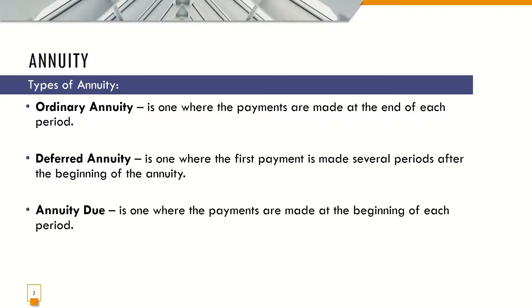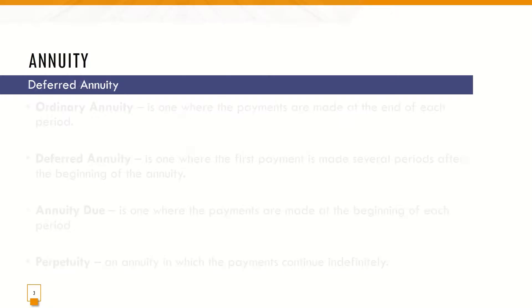As discussed in our previous presentation, Deferred Annuity is one where the first payment is made several periods after the beginning of the annuity. The Annuity Due is one where payments are made at the beginning of each period, and Perpetuity is an annuity in which the payments continue indefinitely.